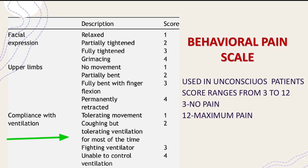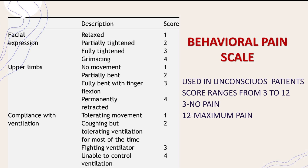For compliance with the ventilator: tolerating ventilation scores 1, coughing but tolerating is 2, fighting the ventilator for most of the time is 3, and unable to control ventilation is 4. The total score ranges from 3 to 12, where 3 indicates no pain and 12 is maximum pain.